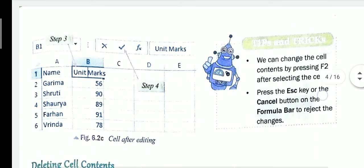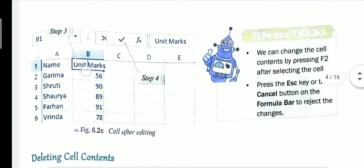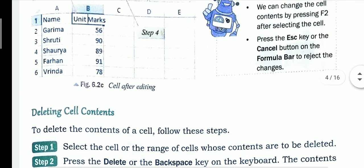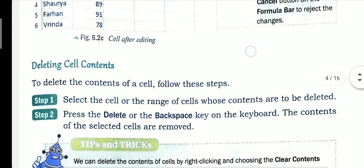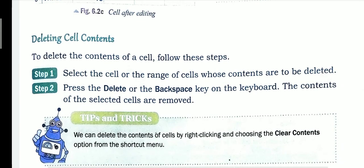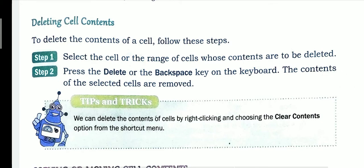This demonstrates that the content of the cell was partially changed — 'marks' was converted to 'unit marks'. The next topic is deleting cell contents. To delete the content of a cell, select the cell or range of cells whose content is to be deleted, then press the Delete key or the Backspace key on the keyboard. The content of the selected cell is removed.